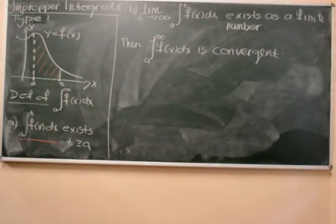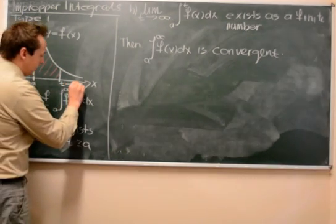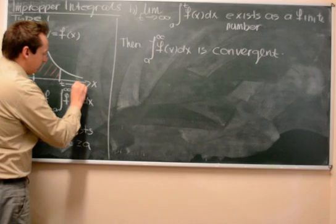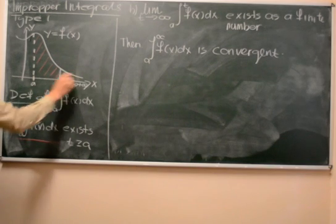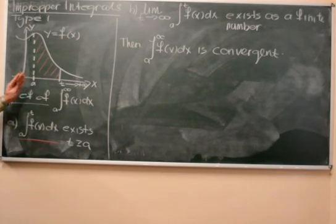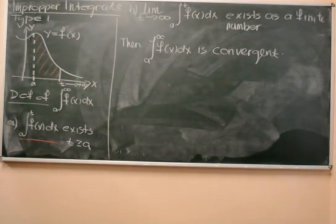You can think of this graphically: as t goes to plus infinity in your picture, what this limit gives you is the area under the curve from a onwards. The fact that this integral is convergent tells you that this area is finite.